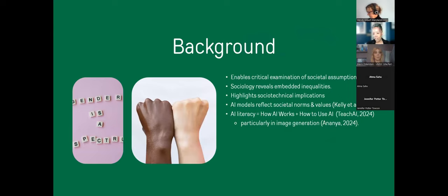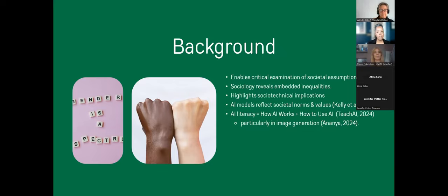Before I get into explaining the nitty-gritty of the assignment that we created, I want to give you a bit of background, especially as it pertains to social sciences and in particular sociology and generative AI. Generative AI provides sociology students with boundless opportunities to critically examine taken-for-granted assumptions in everyday life. For instance, there is an assumption that there are only two genders — male and female — but gender is actually a spectrum. There's another assumption that race is biological, but race is a social construction. Sociologists identify how inequalities are embedded in all aspects of society, including technology. And AI models are a reflection of society and are being used to manage our social roles, from healthcare and education to environmental sustainability.